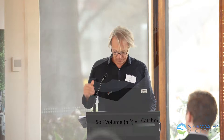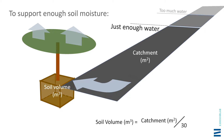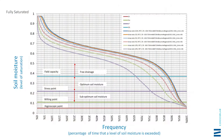My colleague Dale Brown did a lot of modelling to track soil moisture in Melbourne conditions with pavement runoff in and evapotranspiration out — a model of a tree soil cell that isn't exchanging water with the ground around it. We ran many combinations of catchment area and tree canopy soil cell volume, and this allowed us to predict a Goldilocks zone.